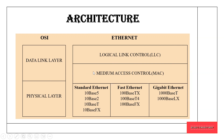It uses CSMA/CA and CD for accessing the frames. This protocol uses different types of media to operate at different speeds, measured in Mbps — millions of bits per second. At 10 Mbps it is standard Ethernet, at 100 Mbps it is Fast Ethernet, and at 1000 Mbps it is Gigabit Ethernet. Notations like 100Base-TX and 10Base-T indicate the cable length and the topology the protocol follows.